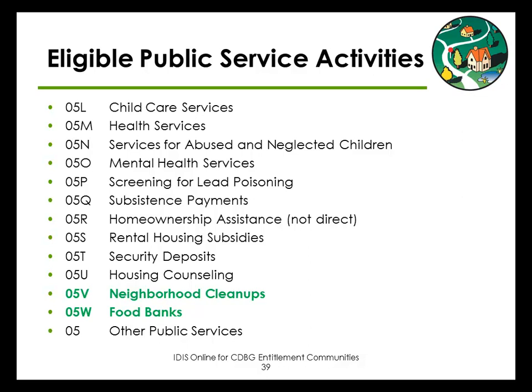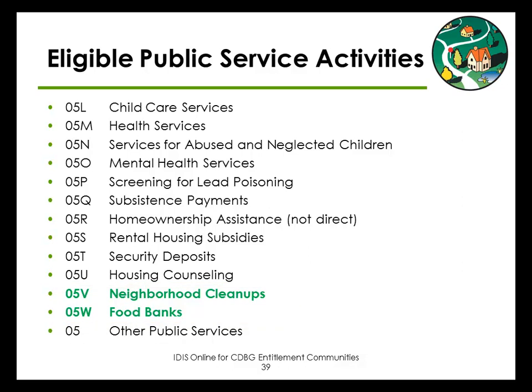This slide lists the rest of the public service matrix codes. HUD will occasionally add new matrix codes to accommodate the types of public service activities grantees are undertaking — for example, O5V and O5W are relatively new. Grantees are not limited to the specific public services listed here. If a grantee funds a service that is not listed, the correct choice would be O5, which is other public services. However, try to rule out the more specific matrix codes first. Grantees should only use O5 if no other matrix code is appropriate.